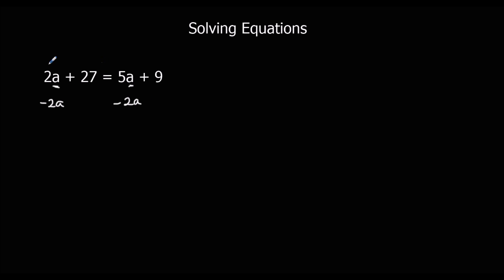On the left side I'm going to take away 2a and on the right side I'm also going to take away 2a. On the left, 2a minus 2a cancels out, leaving 27. On the right, 5a minus 2a is 3a, and we still have plus 9.